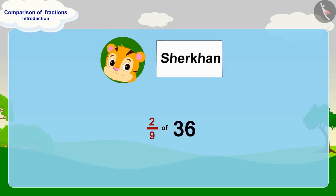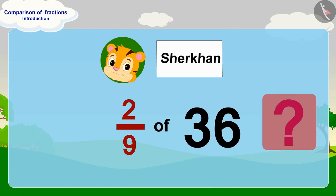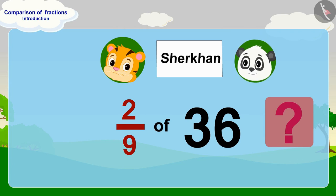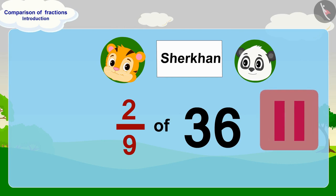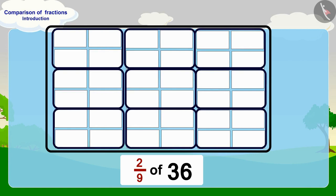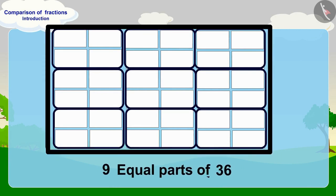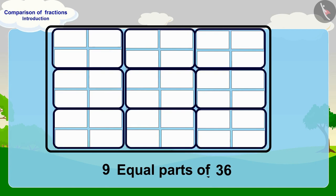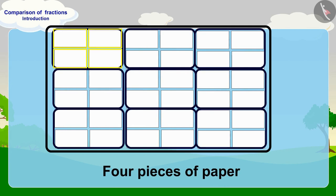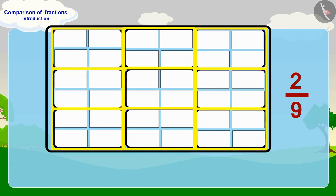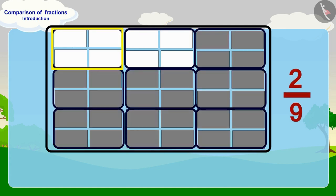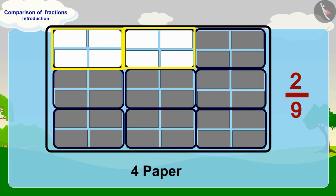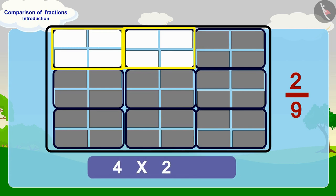Now, Shere Khan has written his name on two ninth of 36. Can you tell how many pieces of paper that is — is it less than or more than Golu's? For two ninth of 36, we divide 36 into nine equal parts. Each part will have four pieces of paper. In two ninth, we take two of these nine equal parts. There are four pieces in one part, so in two parts: two multiplied by four is eight pieces of paper.